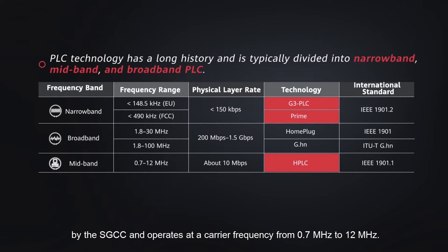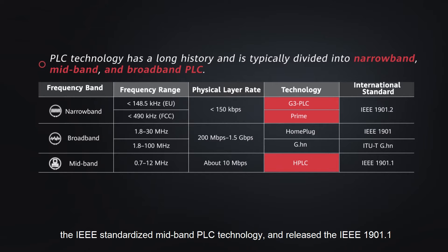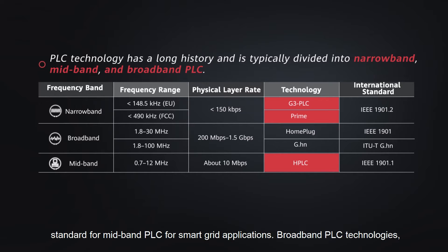Midband PLC originates from high-speed PLC technology used by the SGCC and operates at a carrier frequency from 0.7 MHz to 12 MHz. It is widely used for electricity consumption information collection. In 2018, the IEEE standardized midband PLC technology and released the IEEE 1901.1 standard for midband PLC for smart grid applications.